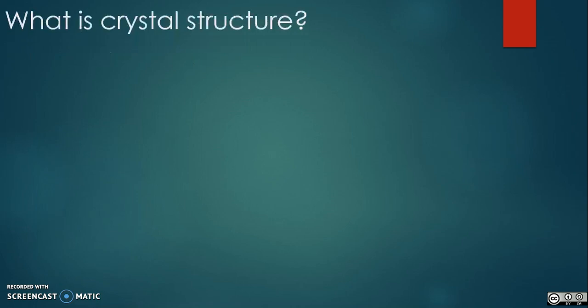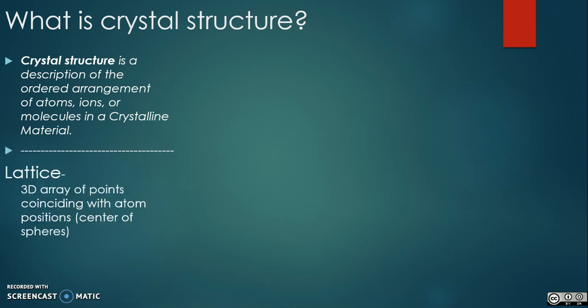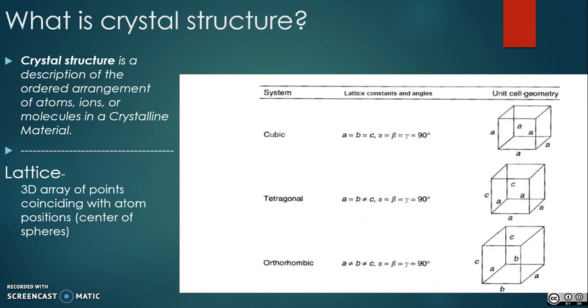Ordered structures occur from the intrinsic nature of the constituent particles to form symmetric patterns that repeat along the principal directions of three-dimensional space in matter.